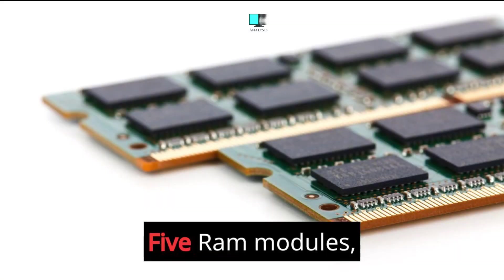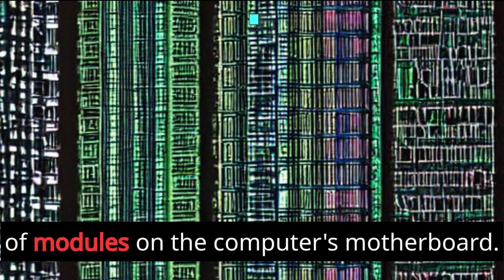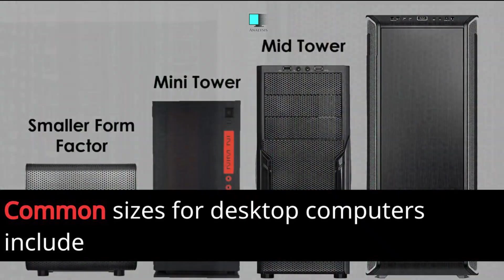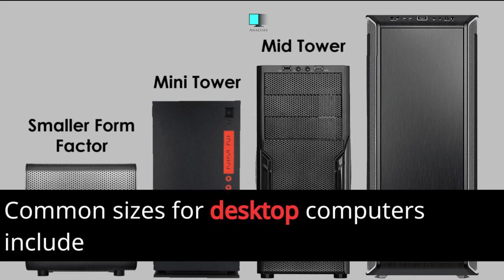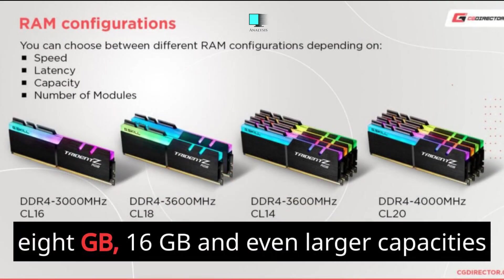5. RAM modules. RAM is physically installed in the form of modules on the computer's motherboard. Common sizes for desktop computers include 4GB, 8GB, 16GB, and even larger capacities.